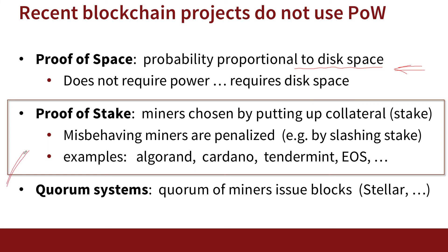Another very popular idea that many blockchains use is proof of stake, where instead of committing resources like computing power or space, miners put up collateral — called stake — using coins they bought, as collateral for behaving honestly. If they ever misbehave, they're penalized. For example, in the Ethereum network there's a proposal called slashing, where misbehaving miners lose some of their stake. There are many examples of proof of stake systems. It's still a complex concept to get right, with many ways to design it into a non-stable equilibrium, making it an active area of research — but there are already experiments in place.